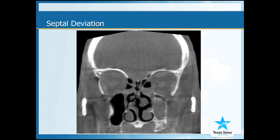In this CT scan, the septum should be straight down the middle like this red arrow. Instead, it is bent to the patient's right as shown with this red diagram. This sort of septal deviation can cause headaches.